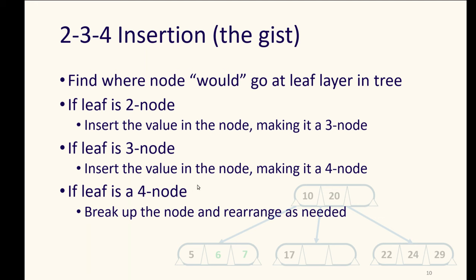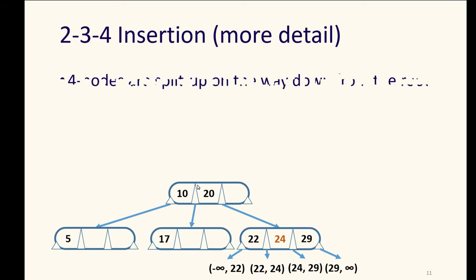We cannot just make a child of that leaf node because we had the rule that leaf nodes will all be at the same level. This gives us a nicely spread out tree that doesn't have differing heights within it. So if the leaf was already full, if the leaf was a four node and I needed to insert there, then I break up the node and I rearrange it as needed. And this is not as difficult as it might seem at first.